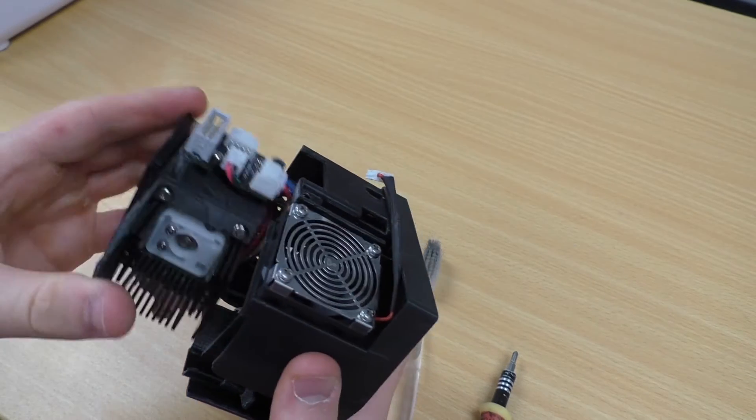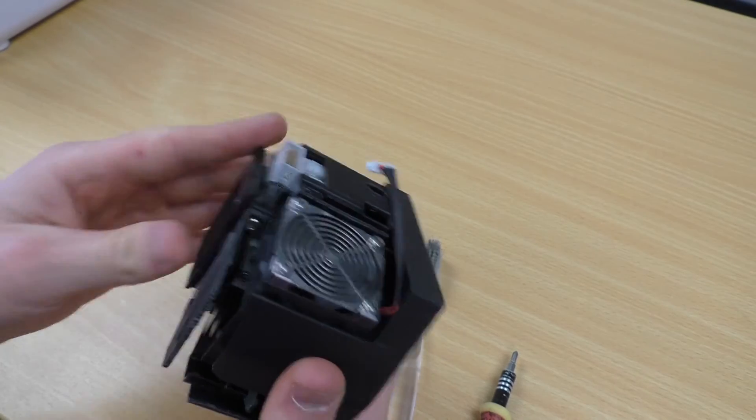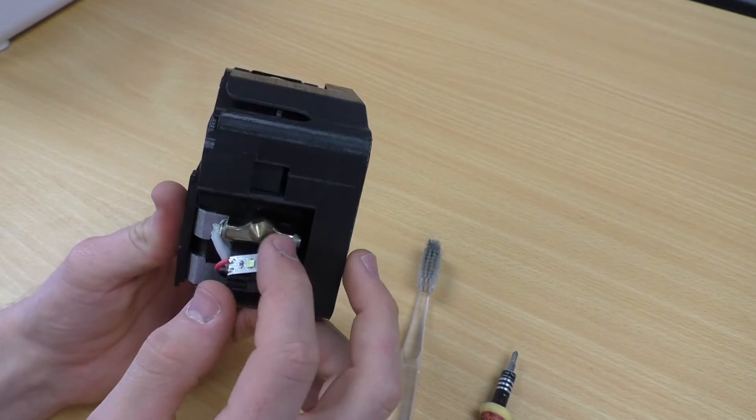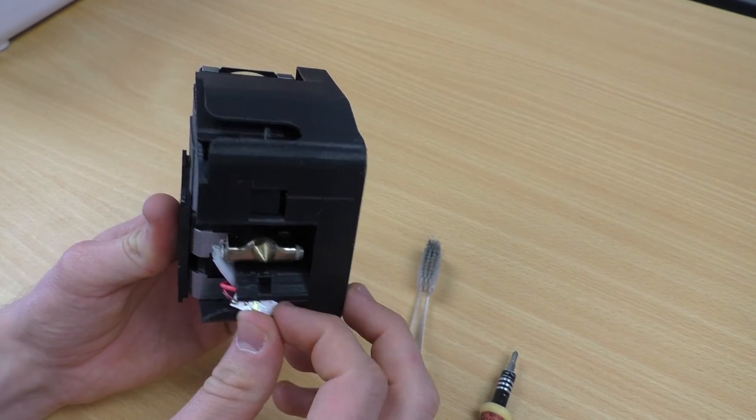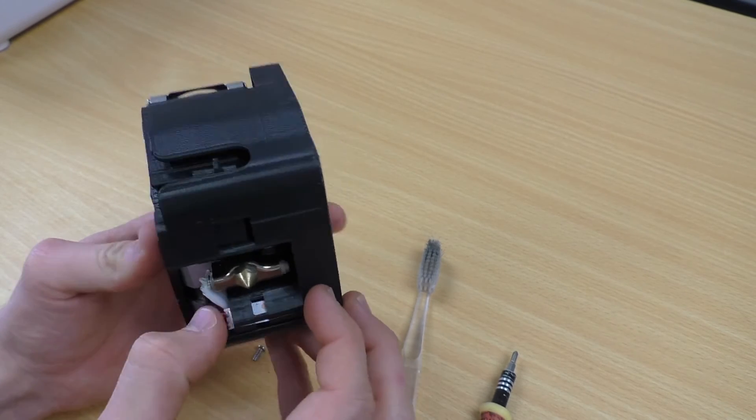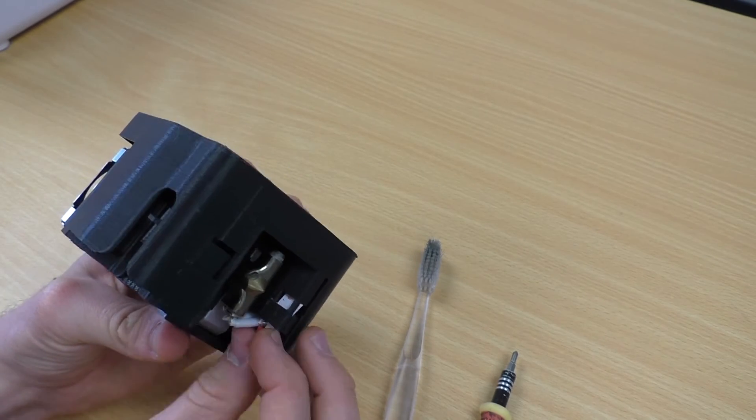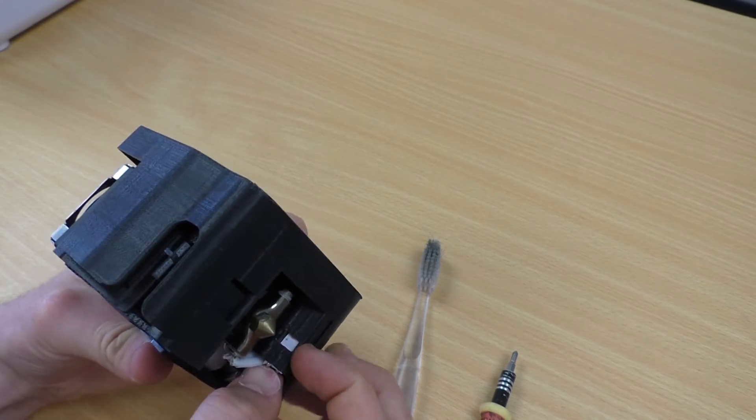Once you've checked that, pop the motor back in, make sure it clicks into place, check underneath where your LED sits. It should slot in just over here so that when you do use your light, you can see what's going on during printing. There we go.